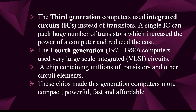Third-generation computers used integrated circuits, replacing transistors. Integrated circuits used a large number of transistors and stored data efficiently. This gave them a small size, low cost, and low power consumption. The fourth-generation computer, from 1971 to 1980, used Very Large Scale Integrated circuits — millions of transistors on a small chip.